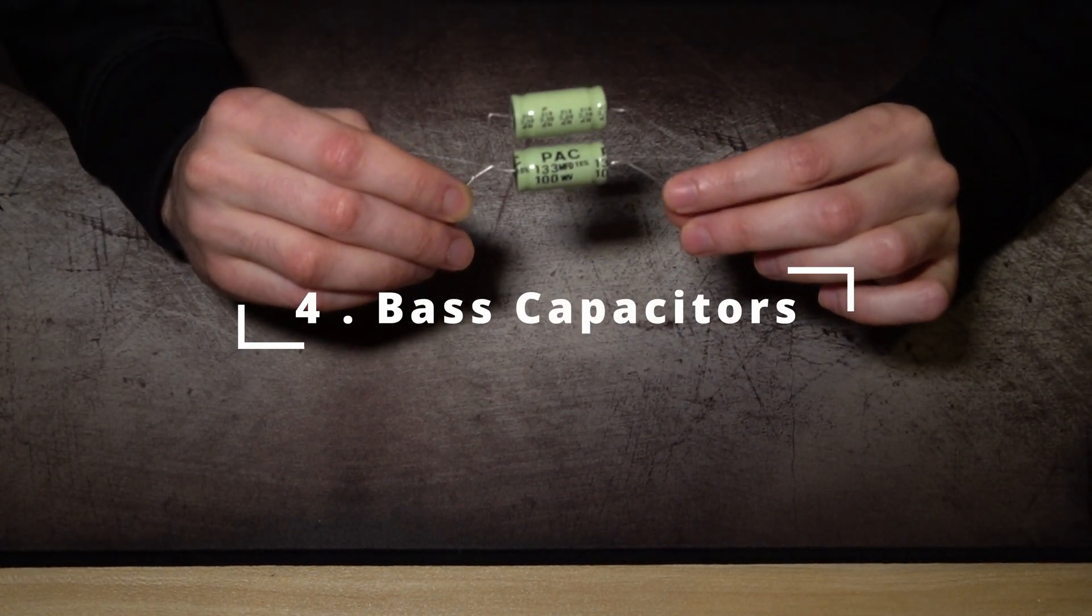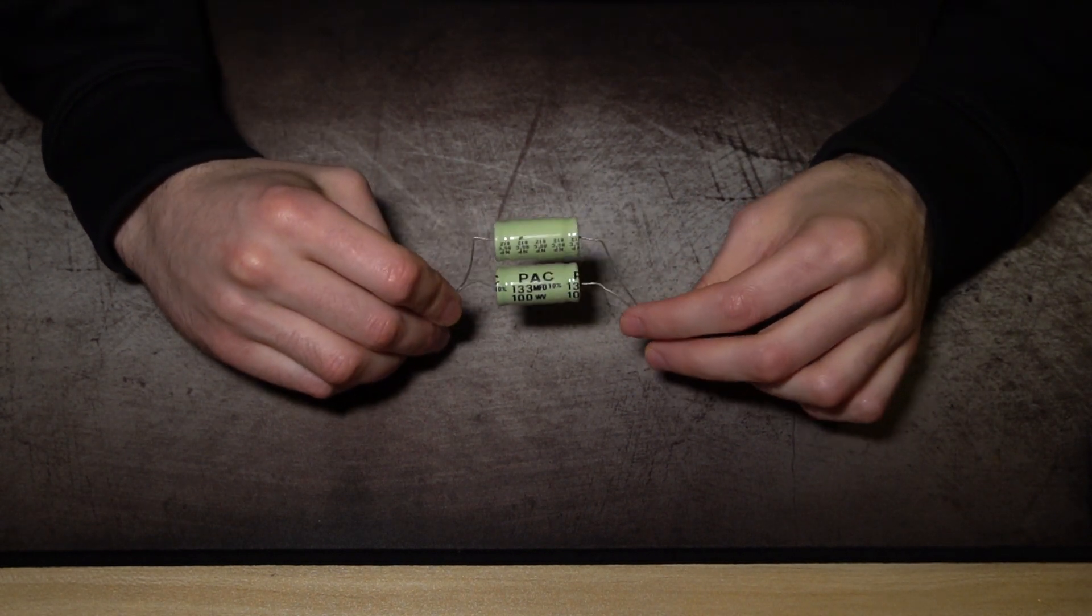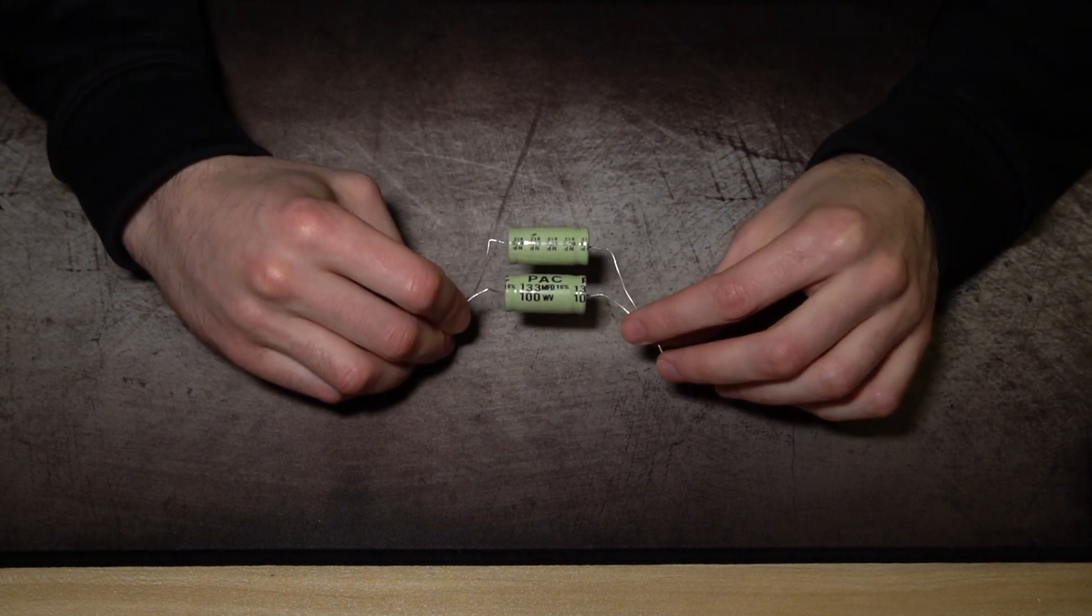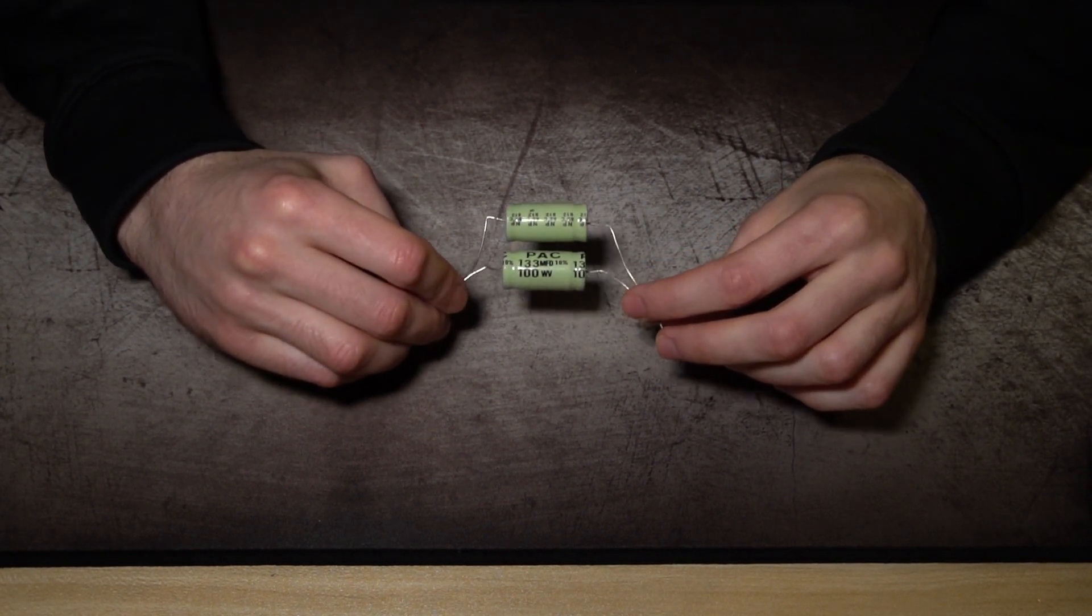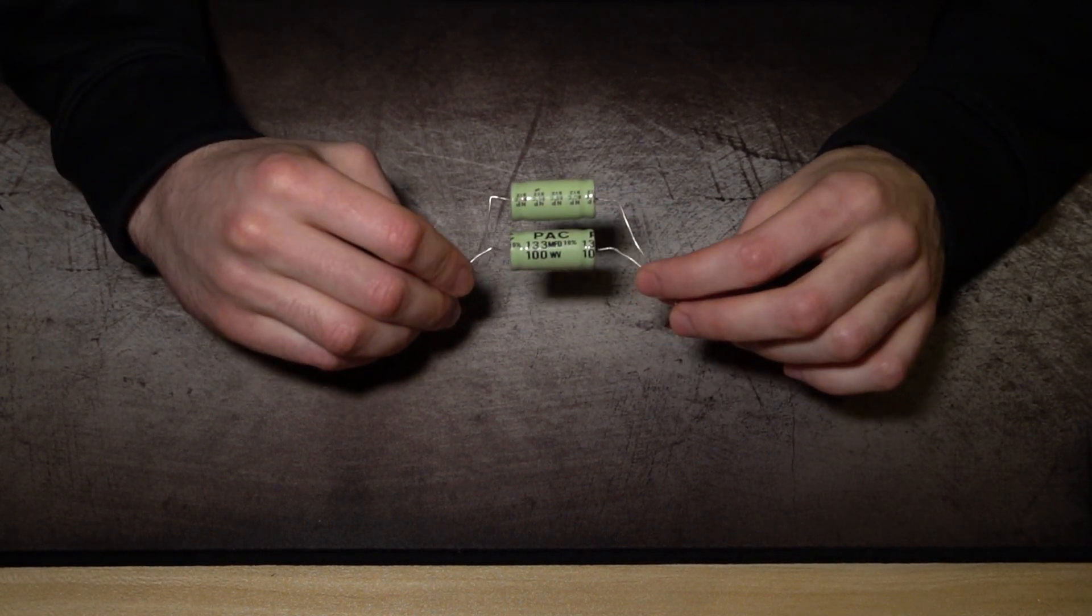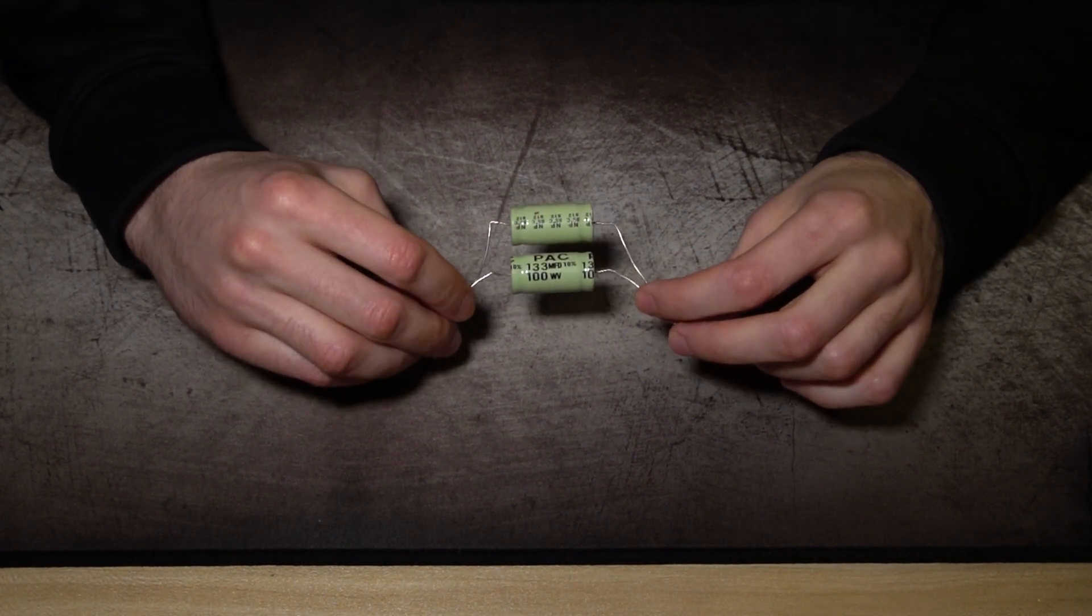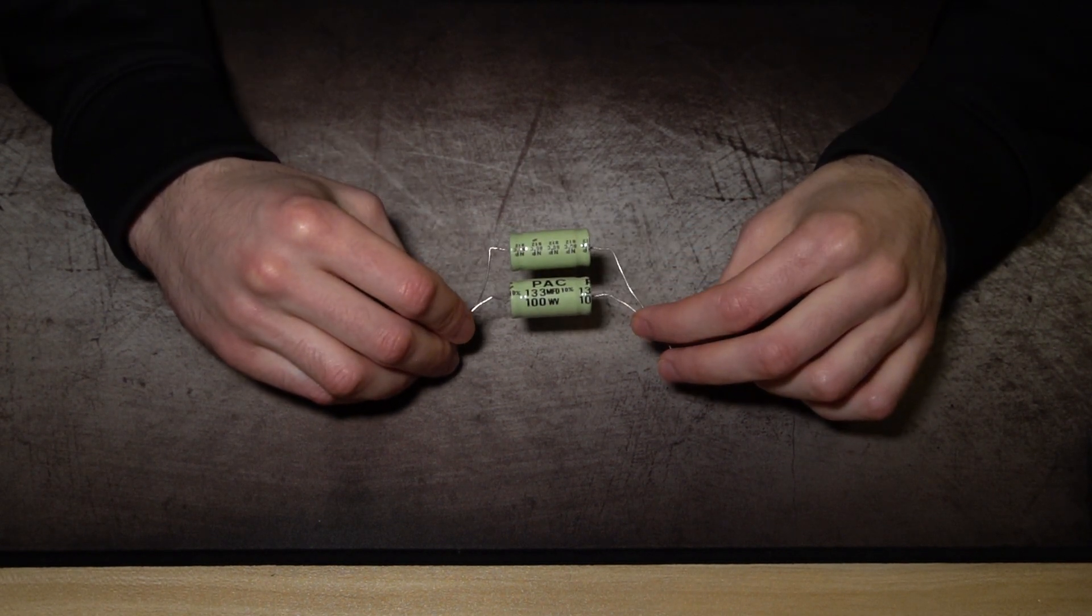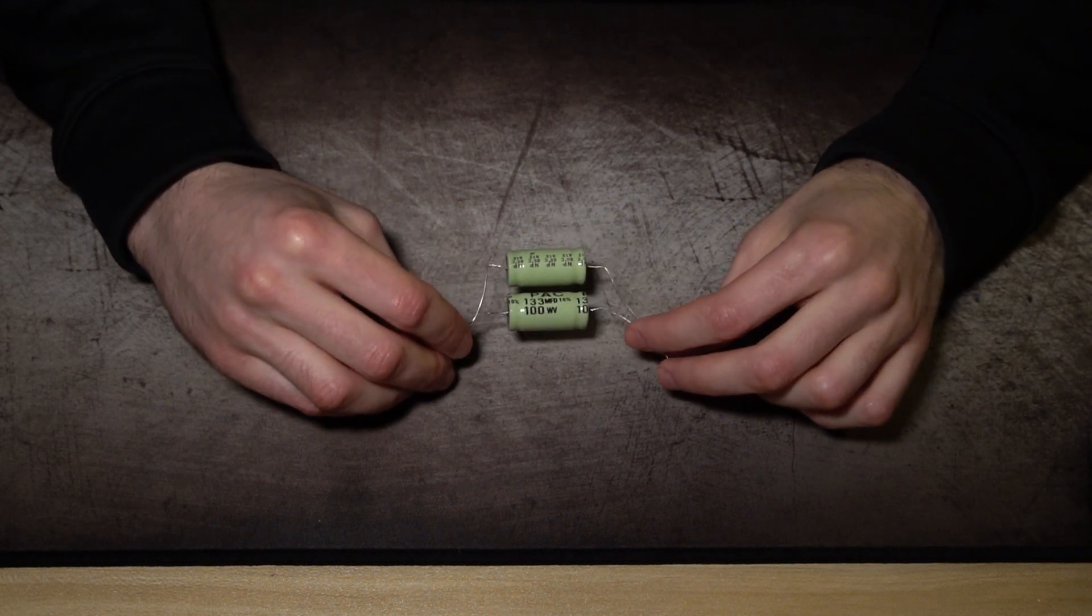These are non-polarized bass blockers. What they do is block the bass or low frequencies that you don't need when you're playing the talk box. You don't want to feel those low ends in your chest because the compression driver is very powerful. Also, if you don't use these with your compression driver, your compression driver will blow.